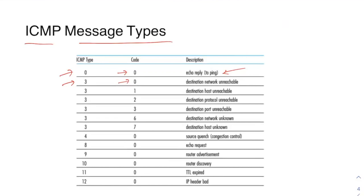There are other ICMP message types as well. In this video I'll focus on the ping command, which uses echo reply (type 0, code 0) and echo request (type 8, code 0). Others you may have seen include TTL expired, destination network unknown, and destination host unknown.